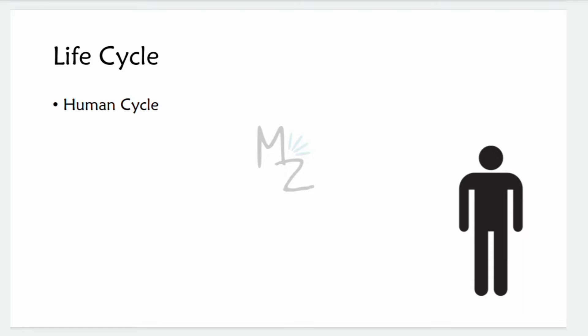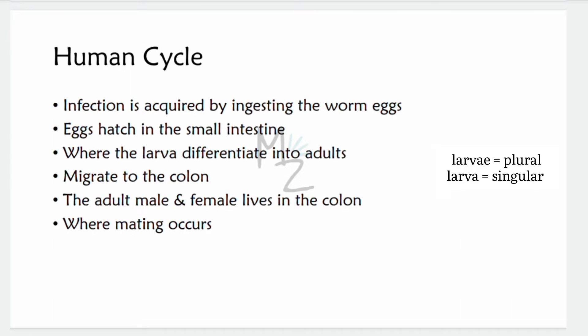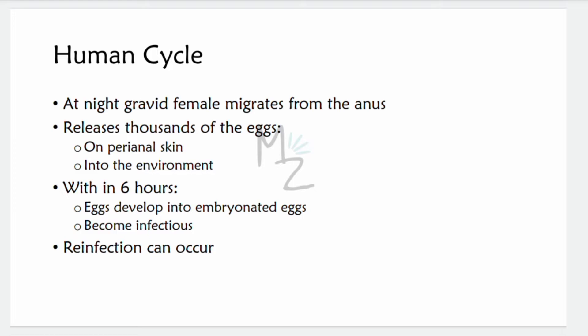Life cycle: it has only one stage — the human cycle. The infection is acquired by ingesting worm eggs. The eggs hatch in the small intestine, where larvae differentiate into adults and migrate to the colon. The adult male and female worms live in the colon, where mating occurs. At night, the female migrates from the anus and releases thousands of fertilized eggs on the perianal skin and into the environment. Within four to six hours, the eggs develop into embryonated eggs and become infectious. Reinfection can occur if eggs are carried to the mouth by fingers after scratching the itchy skin.